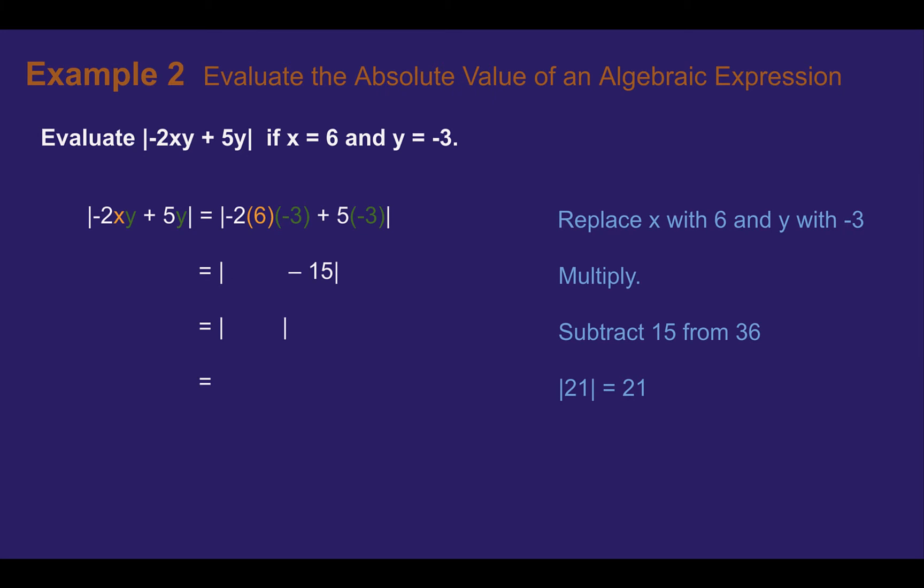Skipping to example two, evaluate the absolute value of an algebraic expression. Evaluate the absolute value of negative 2xy plus 5y if x equals 6 and y equals negative 3. Let's evaluate with x equals 6 and y equals negative 3. Here they showed us plugging in 6 where x was and negative 3 every time that y showed up. They're substituting those values.